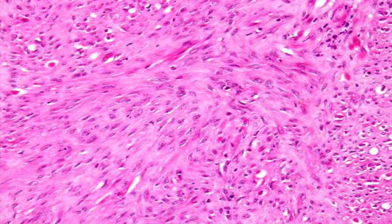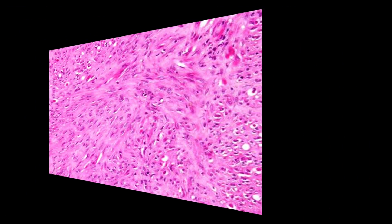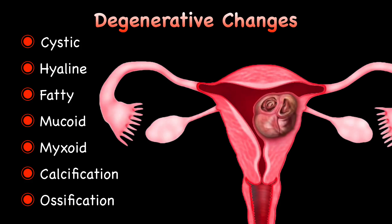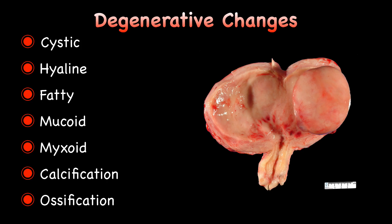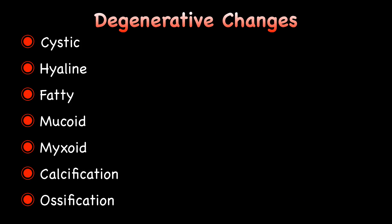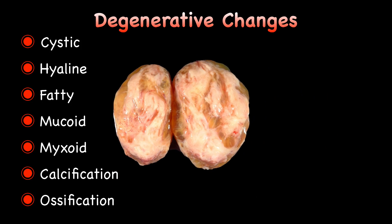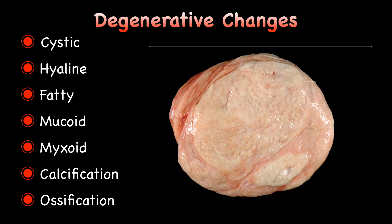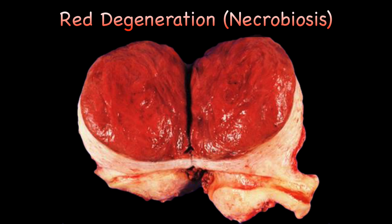Fibroids can undergo a variety of degenerative changes like cystic degeneration, hyaline degeneration, fatty degeneration, mucoid degeneration, calcification, and very rarely ossification. Sometimes fibroids undergo circulatory changes like red degeneration — also known as necrobiosis, which is common during pregnancy — hypertrophy, atrophy, telangiectasis, and lymphangiectasis.